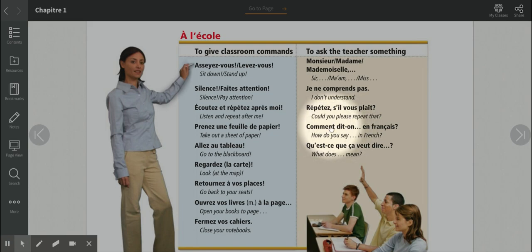Comment dit-on? So when we have a consonant like T and a vowel like O, the T connects to the O. So it's comment dit-on. Comment dit-on means how do you say, and then blah blah blah, en français. So I could say, comment dit-on dog en français? So I'm asking, how do you say dog in French?